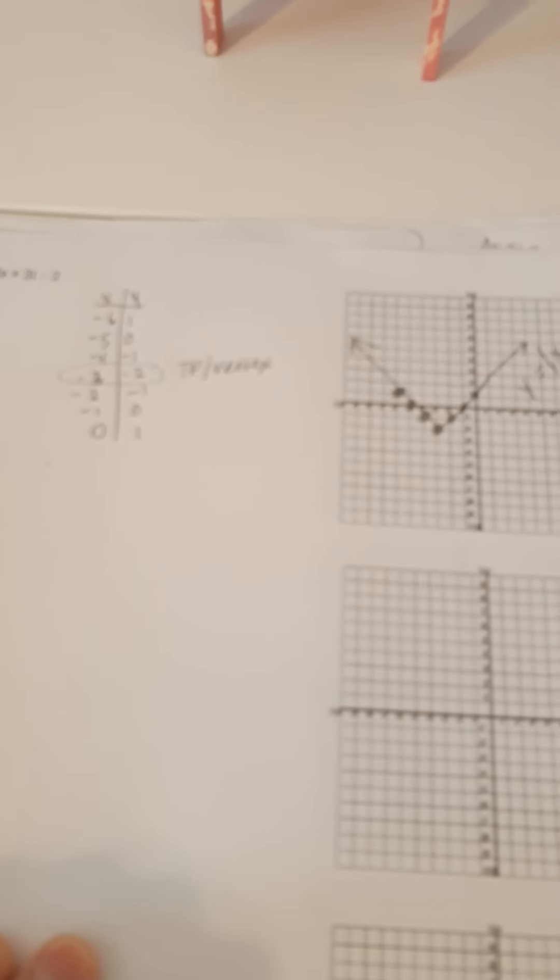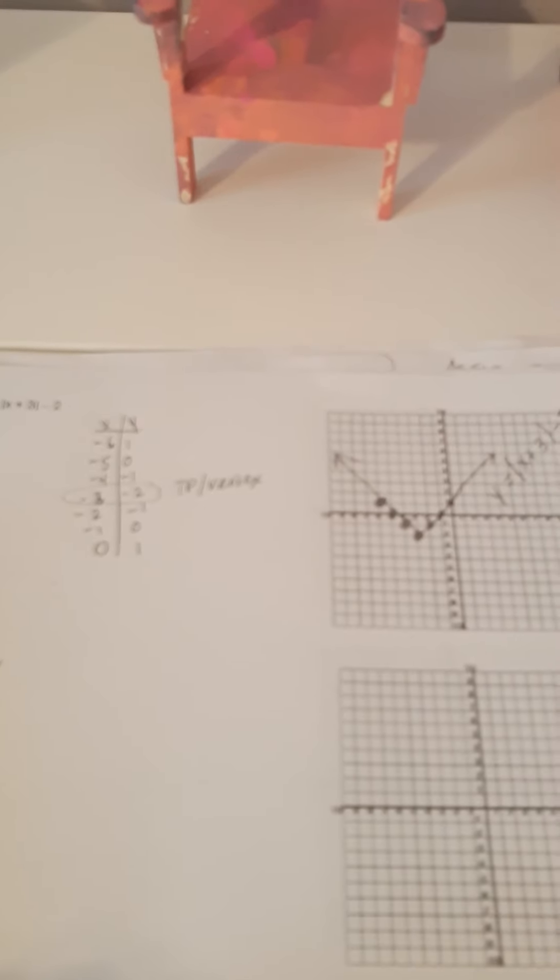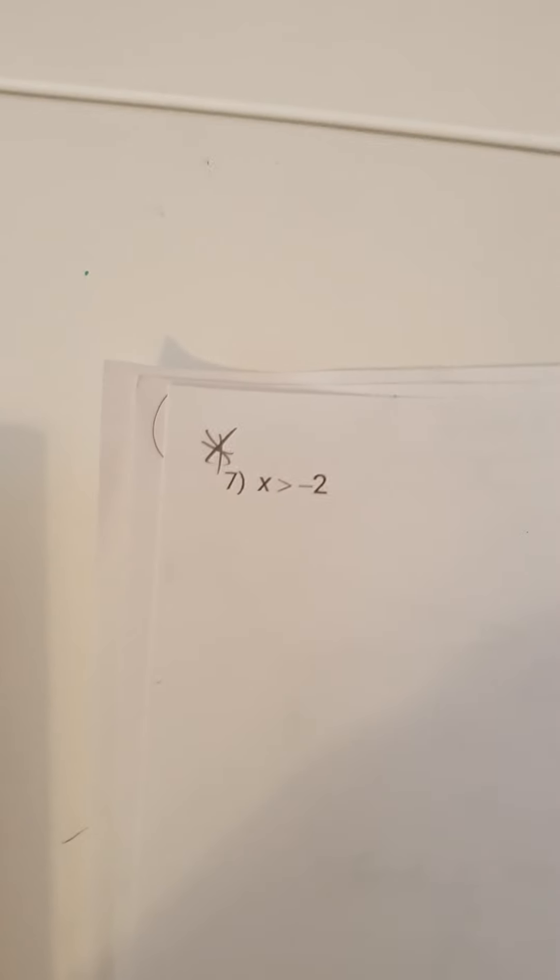Here's the problem. All you need is that. There's really no work to be done for the absolute values. They'll always be given to you as y equals. So now the next one I want to do is number 7.